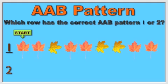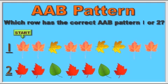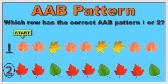Let's try row two: red leaf, red leaf, green leaf. Red leaf, red leaf, green leaf. Red leaf, red leaf, green leaf. I think we have our answer, boys and girls. It was the red and green leaves.